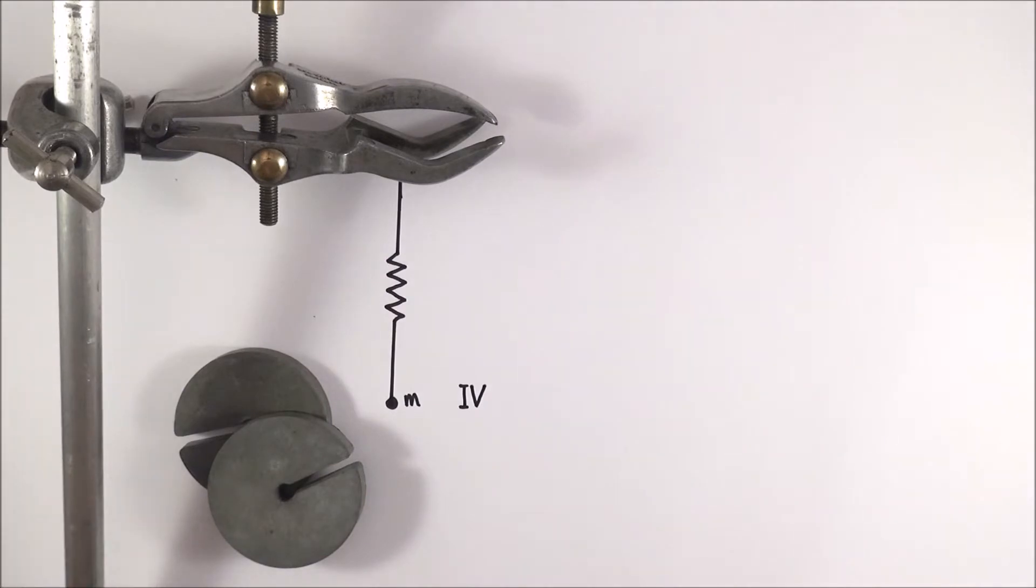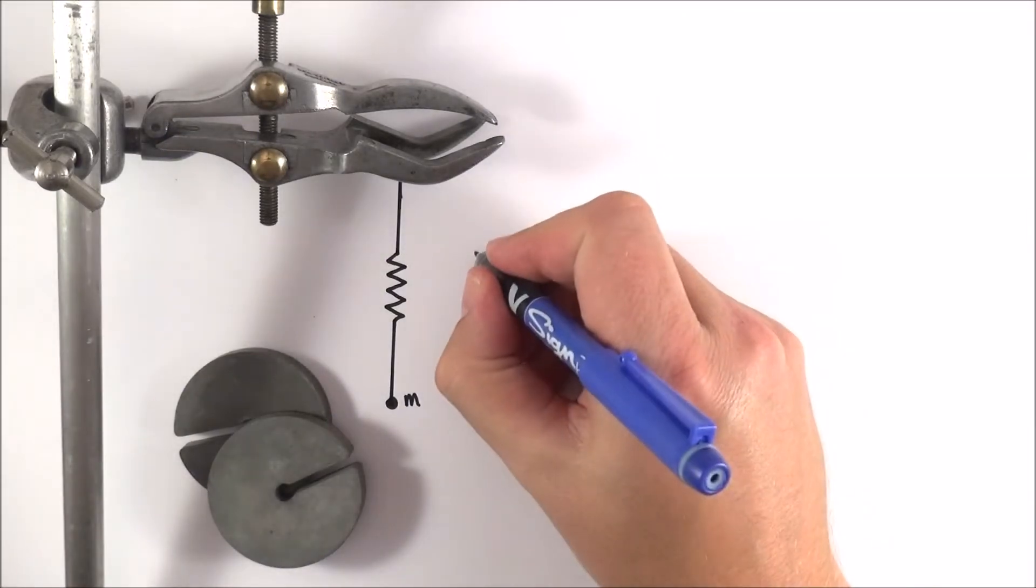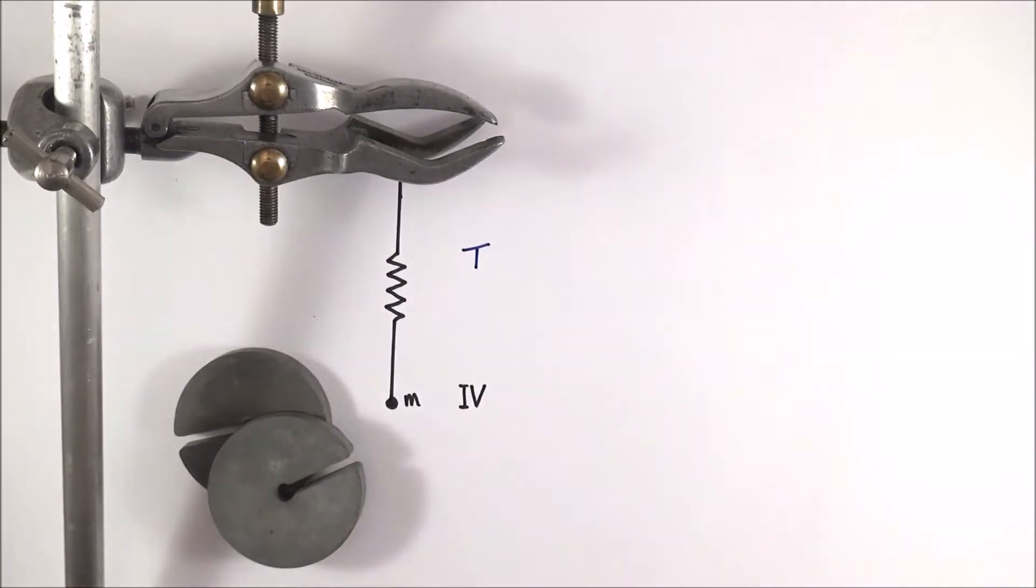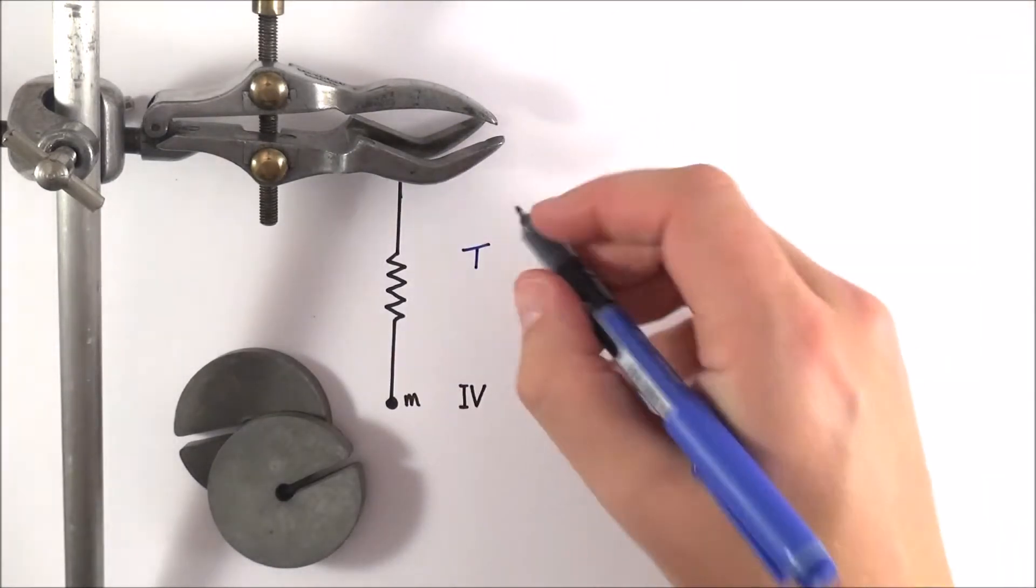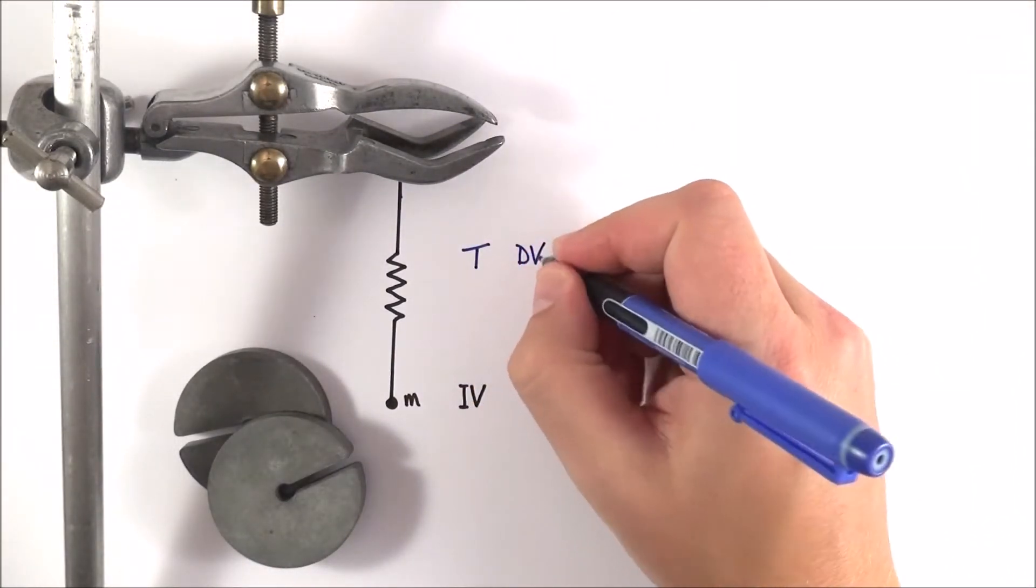As you have a different mass being added this is going to affect the time t for one oscillation. So the time t is then going to be what we call our dependent variable.